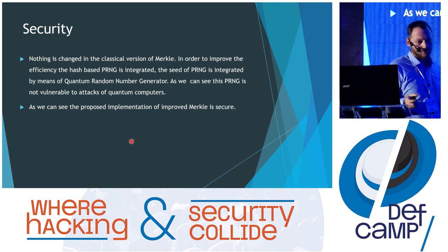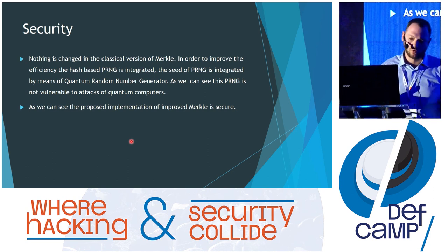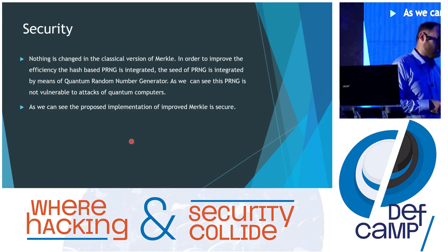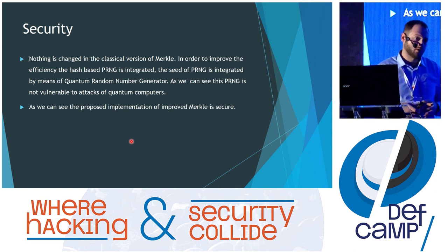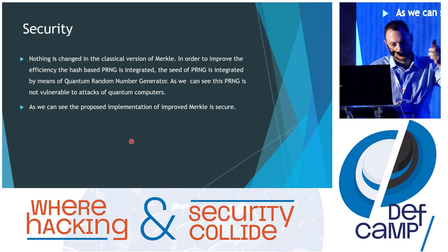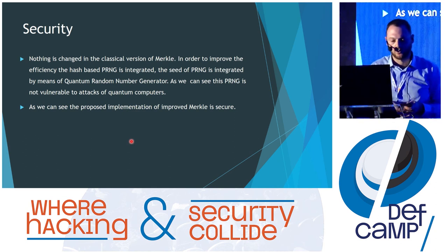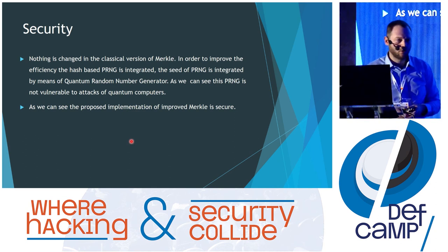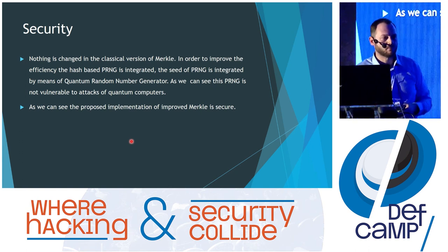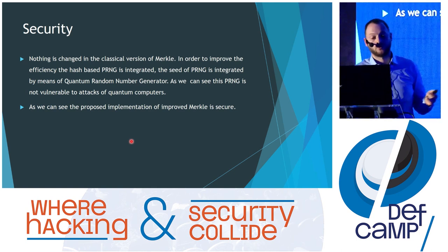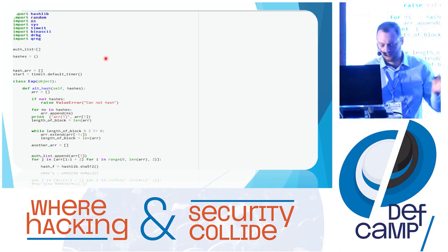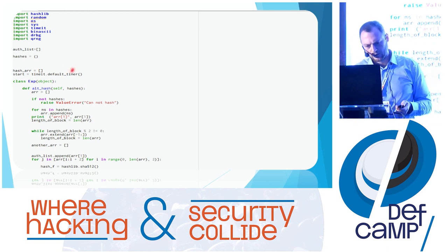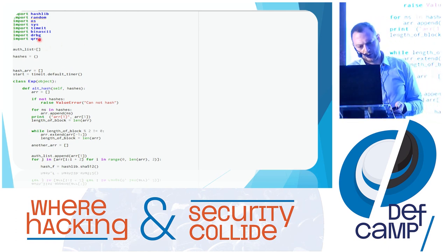The signature verification is absolutely the same process — we don't need the PRNG there at all. Regarding security, the system is secure because what we changed in the classical Merkle scheme is only the integration of a quantum-resistant PRNG. It is quantum-resistant because it uses hash functions — specifically SHA-512 — and as a seed it receives a truly random seed obtained from the quantum random number generator.